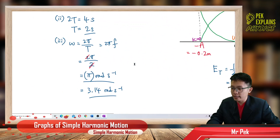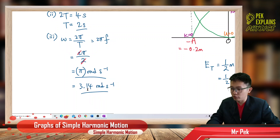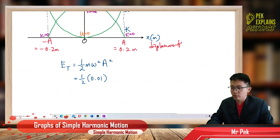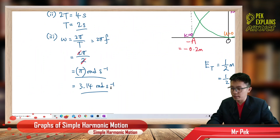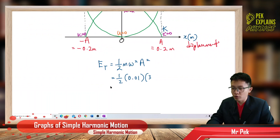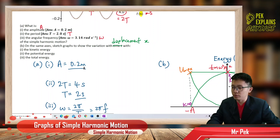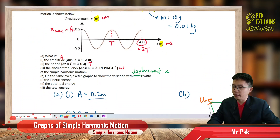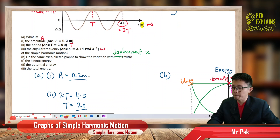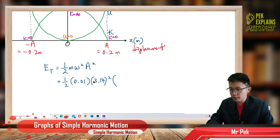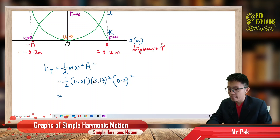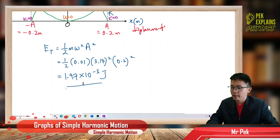Calculating: ½ × 0.01 × (3.14)² × (0.2)². The answer is 1.97 × 10⁻³ joules. That is our total energy — the maximum value on the energy axis.